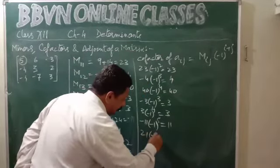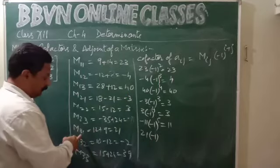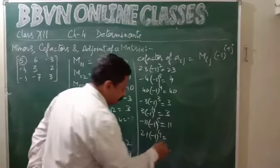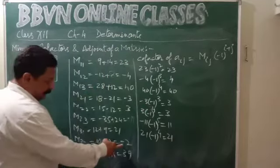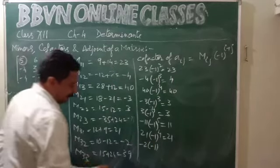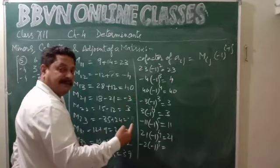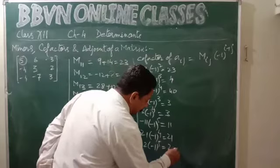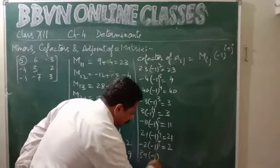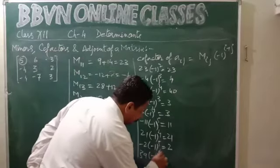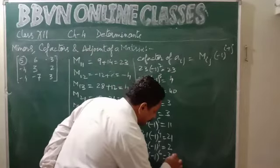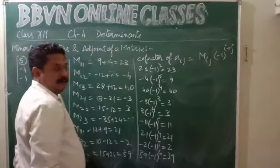For A32: minus 2 multiplied by minus 1 to the power 3 plus 2, which is 5; minus 1 to the power 5 is minus 1, so minus 1 multiplied by minus 2 becomes 2. For A33: 39 multiplied by minus 1 to the power 3 plus 3, which is 6; minus 1 to the power 6 is positive 1, so this remains 39. So these are all the cofactors.